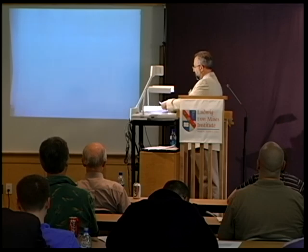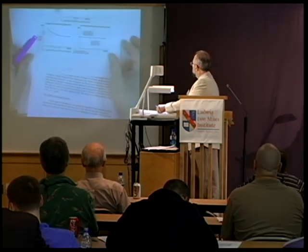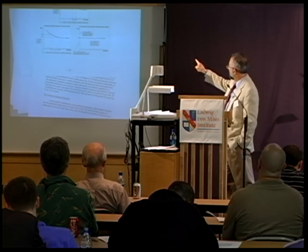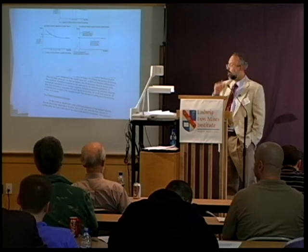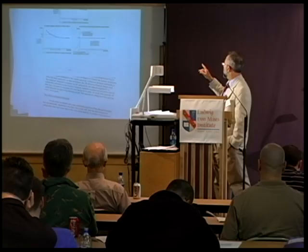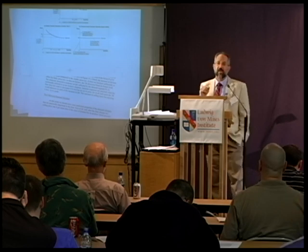Take the other extreme case: a completely horizontal demand curve — perfectly elastic. In economics textbooks, this is supposedly the case for a small wheat farmer in Iowa. What that tells us is that this farm can sell as much wheat as it wants at the same price of $4, because it's such a small part of the market. If they try to charge $4.01, no one will buy that wheat because there are many other farmers throughout the world selling wheat at $4. So they could theoretically go from selling an infinite amount at $4 to selling nothing.